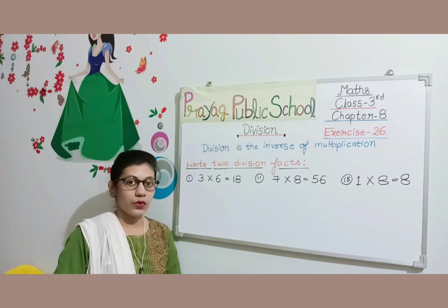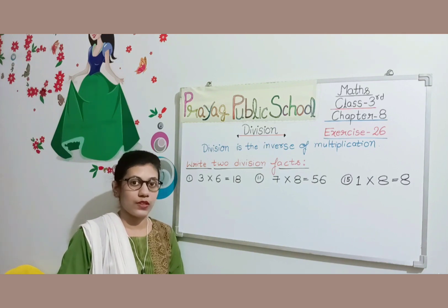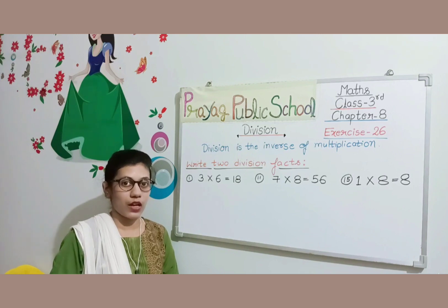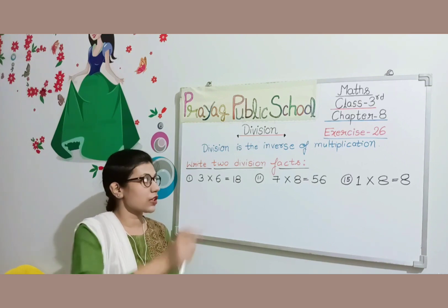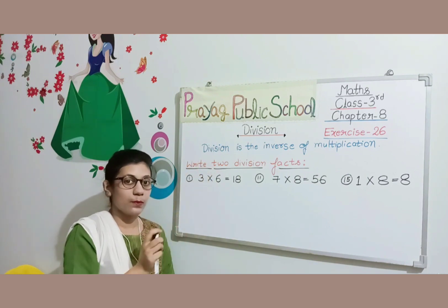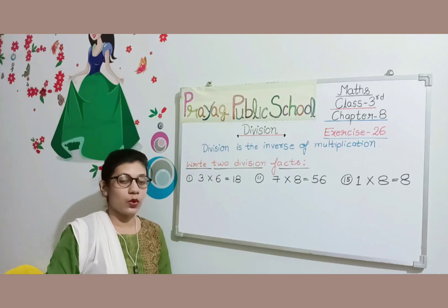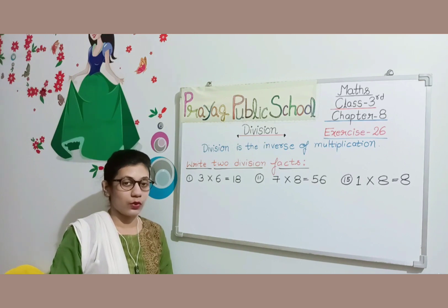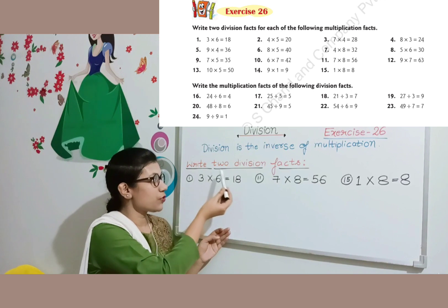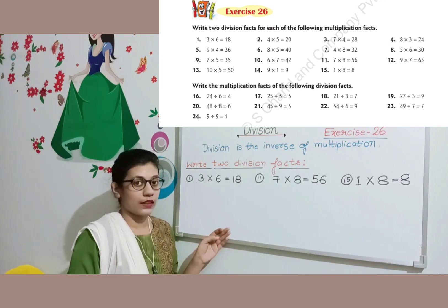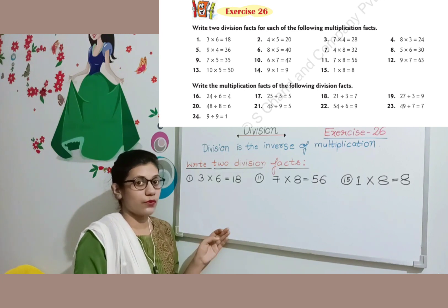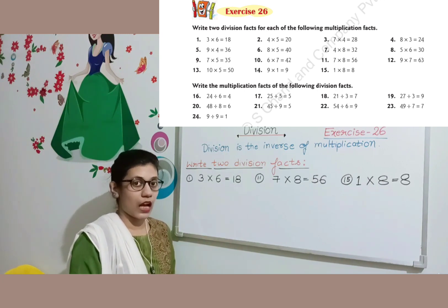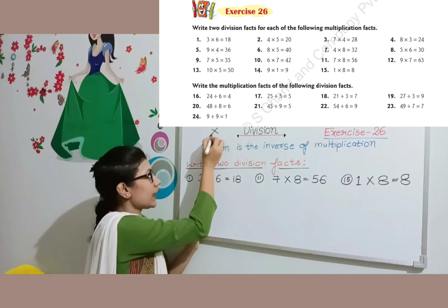Both answers are the same — this shows the relation between multiplication and division. Multiplication is known as repeated addition and division is known as repeated subtraction. Multiplication and division are opposites of each other — in other words, they are inverses of each other. So when you are asked for multiplication facts or division facts, you convert between them accordingly.